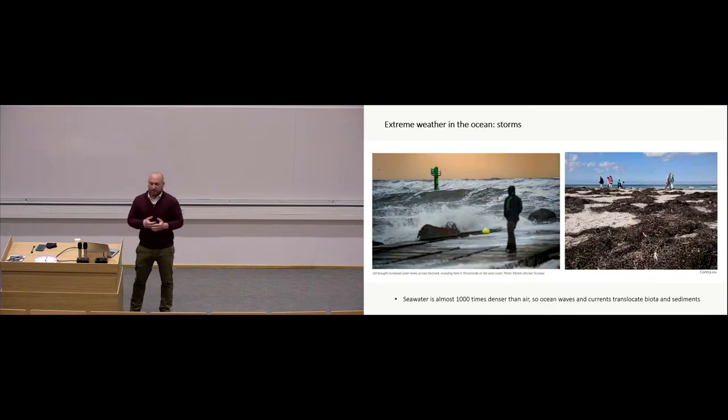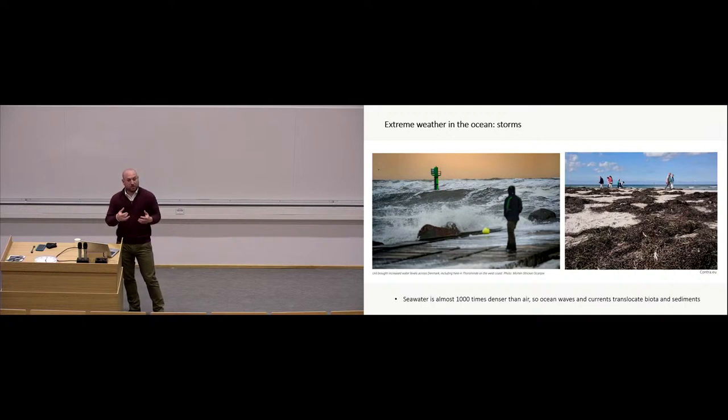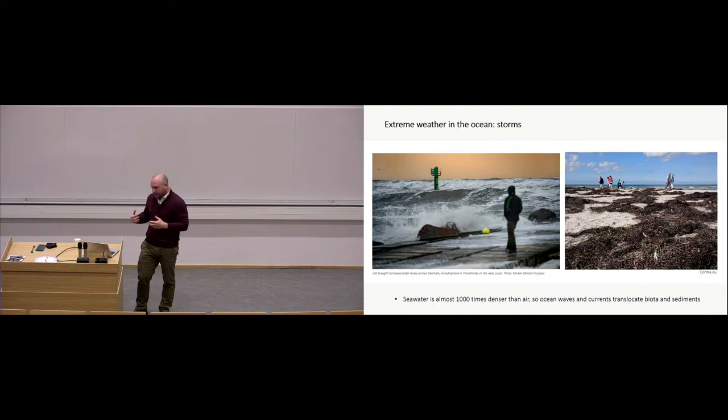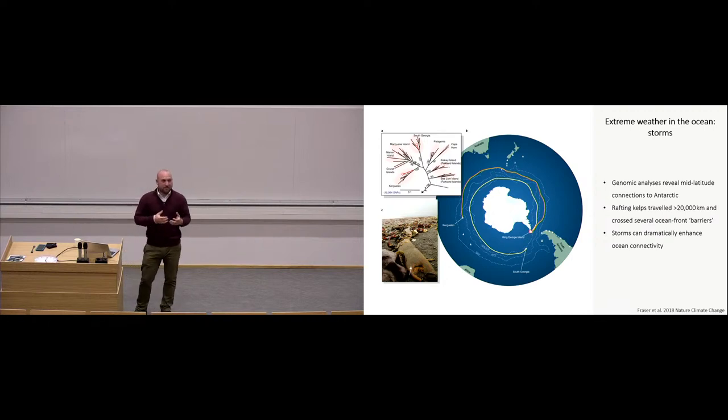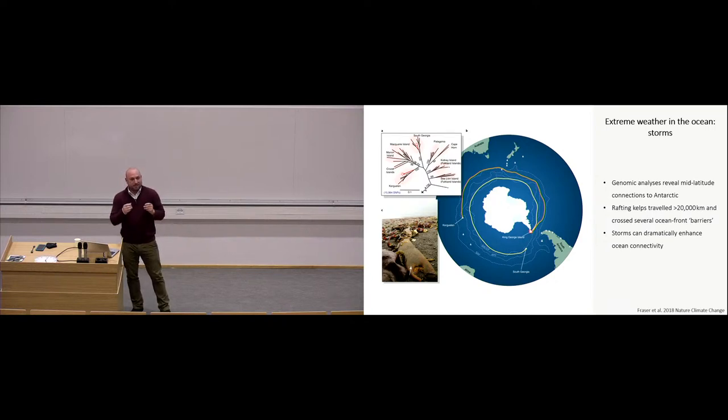So when it comes to the oceans, we also naturally see extreme events. Storms are one example of this. And in the picture to the right, you can see that after a storm, a lot of, in this case, aquatic plants get washed up onshore. So these get eroded from their habitat underwater and get forced onto the shore. So sea water is almost a thousand times denser than air. So moving currents and waves carry massive kinetic energy that dislodge these biotic communities and re-suspend sediments. Storms also dramatically enhance ocean connectivity. This is an interesting case study from Antarctica, where researchers collected fragments of kelp. And then using genomics analysis revealed that these fragments of kelp actually belonged to mid-latitudes populations and had traveled more than 20,000 kilometers to reach the Antarctic Peninsula.